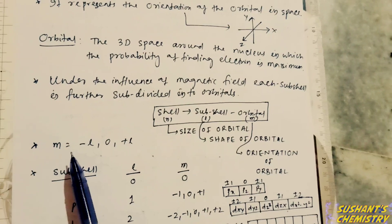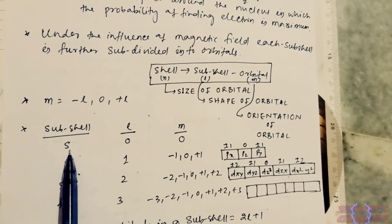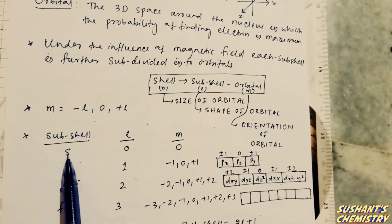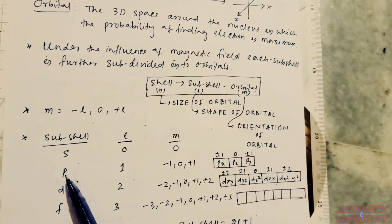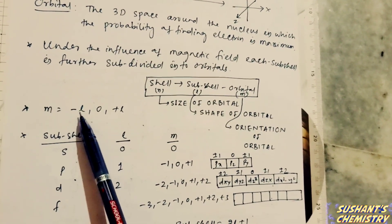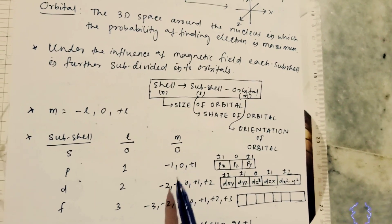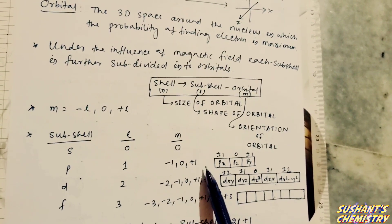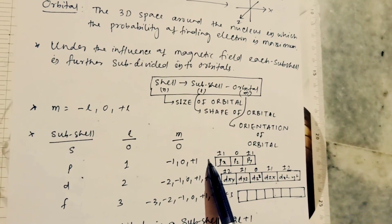For the s subshell, the value of l is zero. By putting l equals zero in this formula, we get m equals zero, meaning the s subshell contains only one orbital. For the p subshell, the value of l equals one. By putting one in this formula, we get minus one, zero, plus one — meaning the p subshell contains three orbitals: px, py, and pz.